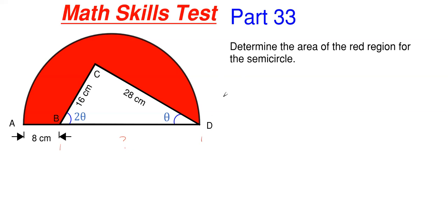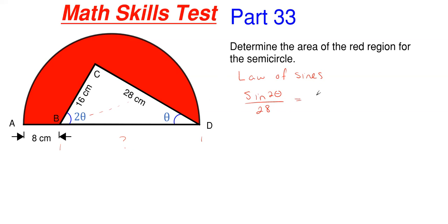To find BD with the given information, we're going to use the law of sines to help solve the triangle. It won't give us BD directly — we'll need another step — but it will get us in the right direction. Utilizing the law of sines, we're going to find what theta is. So: sine of 2θ divided by the side opposite 2θ, which is 28 centimeters, must equal sine of θ divided by the side opposite it, which is 16 centimeters.